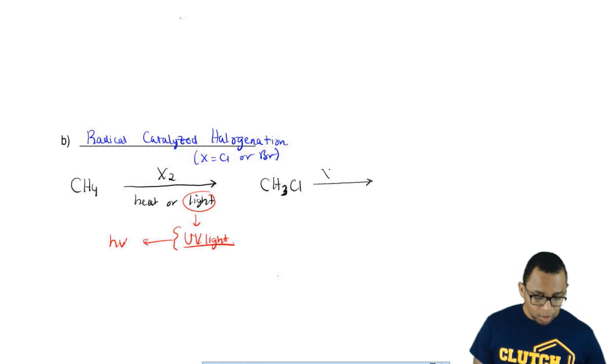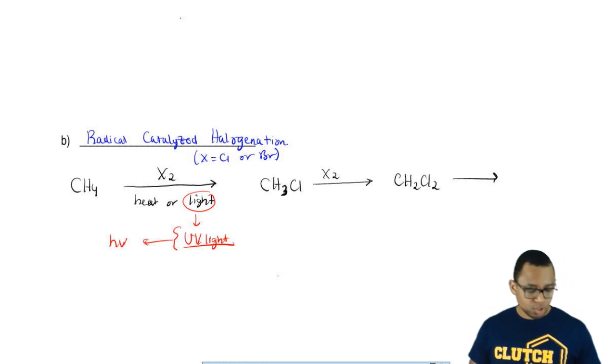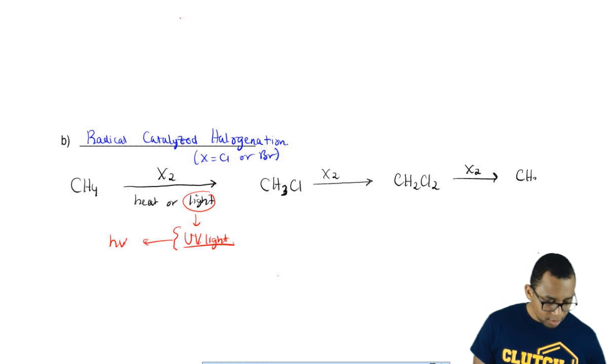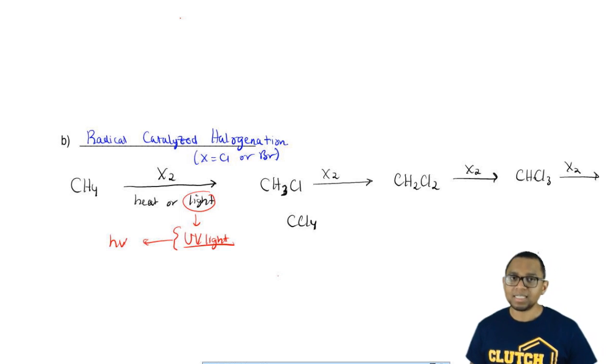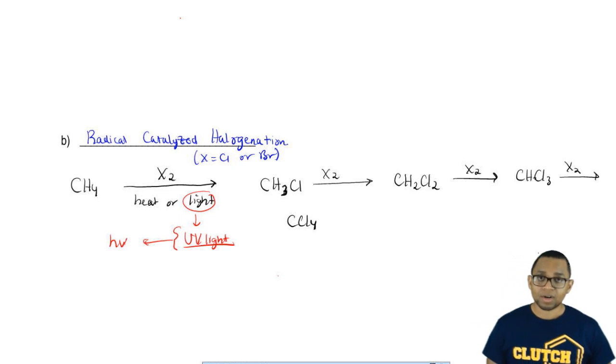We could bring in another mole of X2, some more heat, some more light and that would replace another hydrogen. We could keep bringing in more X2, more Cl2, more heat, more light to replace another and then do it one more time. At the end, what we'll have is CCl4 as our compound.